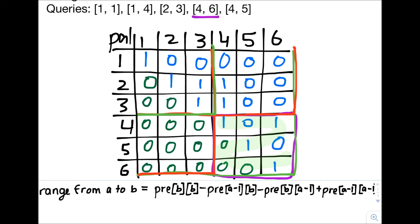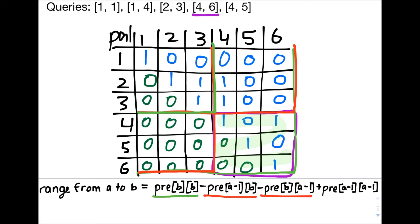Now, if we want to answer the query in the range from A to B, in our example in the range from 4 to 6, we first take pre of B,B, which in our example is pre of 6,6. That's the big green region. We then have to subtract the two small red regions. The first one is pre A-1,B, which is pre 3,6. We then have to subtract pre of B,A-1, which in this case is pre of 6,3. We then have to add back the tiny green region, which is pre A-1,A-1, or in our case pre of 3,3. This is how we answer a query.